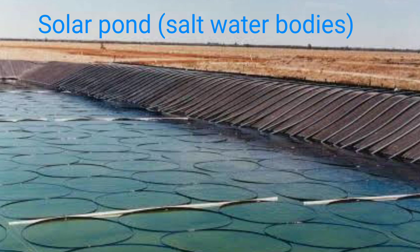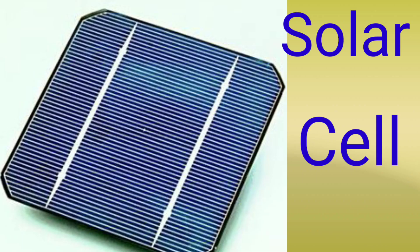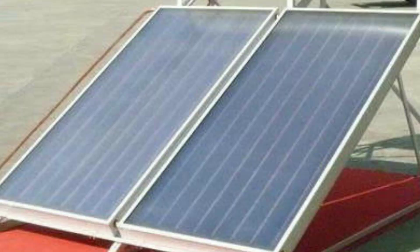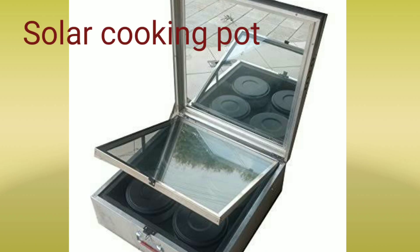So how can we capture solar energy? We can capture solar energy by flat plate collectors, solar ponds which are salt water bodies, solar powered cooking pots, and solar cells. Flat plate collectors are blackened metal plates covered with one or two sheets of glass panels and have tubes for carrier fluids. They can heat fluid up to 60 to 90 degrees Celsius.